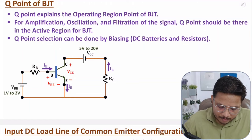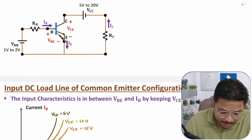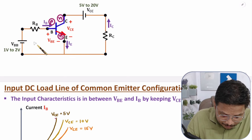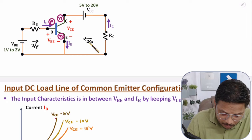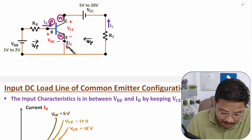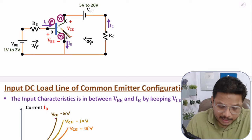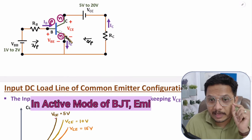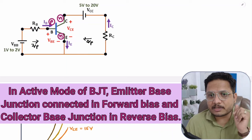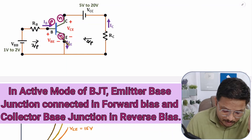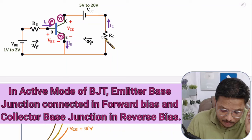Let me take one example considering common emitter configuration. Here we have an NPN transistor with input on one side and output on the other side. The emitter is common between input and output — that is why this is called common emitter configuration. To keep BJT in active region, we provide biasing using VBB and RB at the input, and VCC and RC at the output.